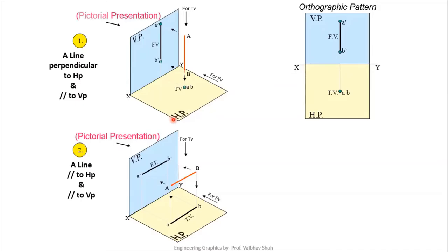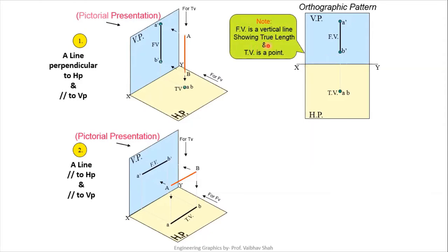Converting to 2D: we rotate the horizontal plane 90 degrees clockwise around the vertical plane. For Case 1, the front view is a vertical line of true length just above the XY line in VP, showing A' and B', and the top view is a point view just below the XY line. Whenever a line is perpendicular to HP, you get a point view as the top view. Whenever a line is parallel to any plane, you get true length in that view.